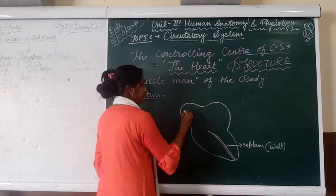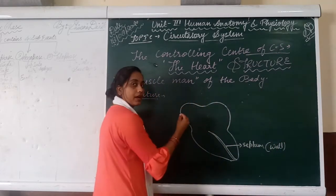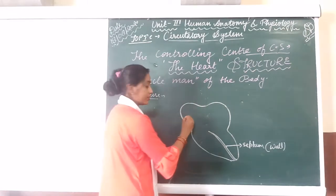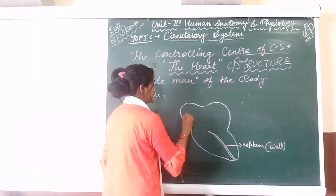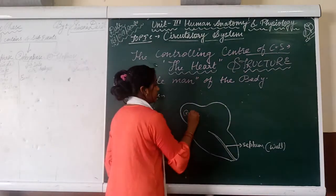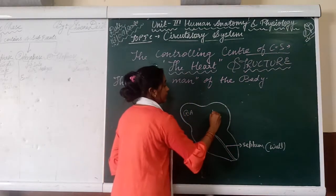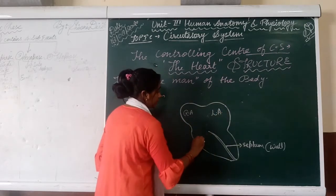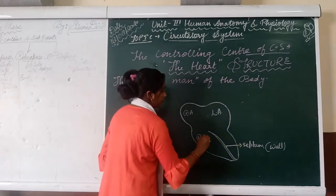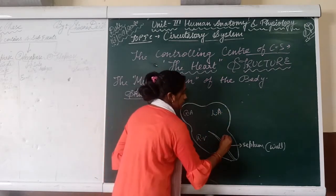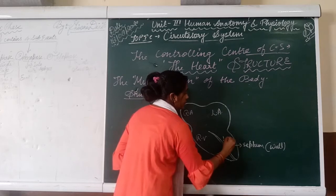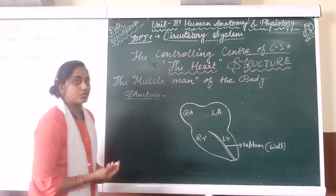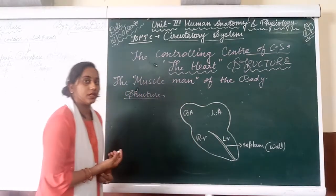We will divide and label the four chambers: that is the right atrium, that is the left atrium, that is the right ventricle, and that is the left ventricle. So these are the four chambers of the heart.